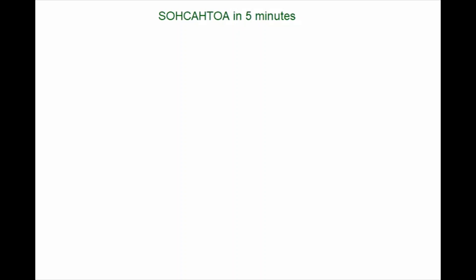In this tutorial we're going to talk about SOHCAHTOA, which means we're going to talk about the trigonometric ratios sine, cosine and tangent in a right-angled triangle. For this we're going to start out by drawing up a right-angled triangle. The trigonometric ratios connect the measures of the angles with the lengths of the sides of the triangle, specifically the measures of the acute angles within the right-angled triangle.